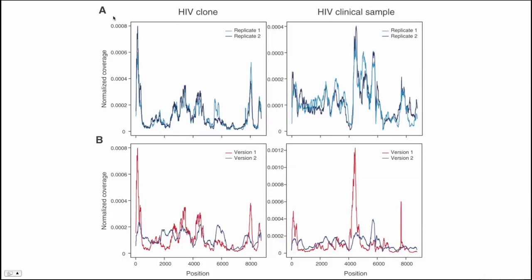Here is a figure looking at the coverage across the HIV genome for both clone and clinical samples. In the top half, we're looking at different replicates using the Ovation RNA-Seq kit shaded in two different shades of blue. Both replicate one and replicate two are very similar in their coverage across the entire HIV genome for both clones and clinical samples. In the bottom half, we're comparing version one and version two of the Ovation RNA-Seq with the same samples, and version two has more even coverage than the version one system.